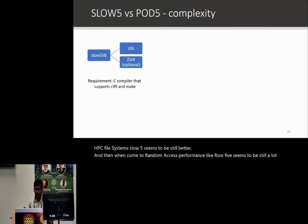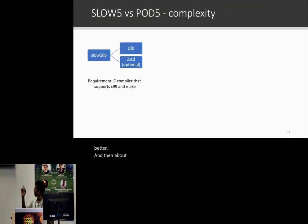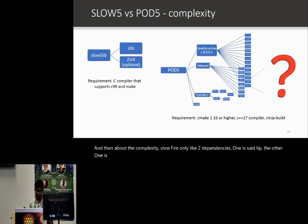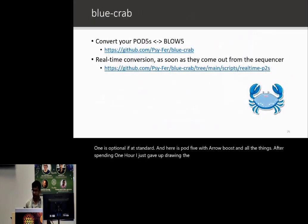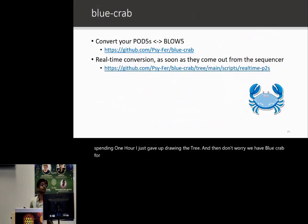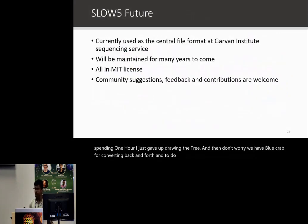In terms of complexity, SLOW5 has only two dependencies — one is zlib, the other is optional if it's standard. Pod5, on the other hand, depends on Arrow, Boost, and many more — after spending an hour I just gave up drawing the dependency tree. Don't worry though — we have blue-crab for converting back and forth between formats and for real-time conversion as well.